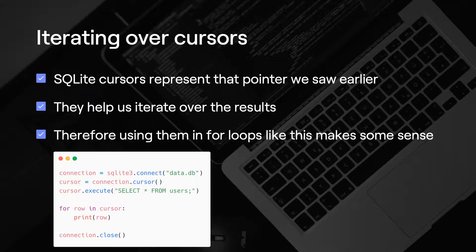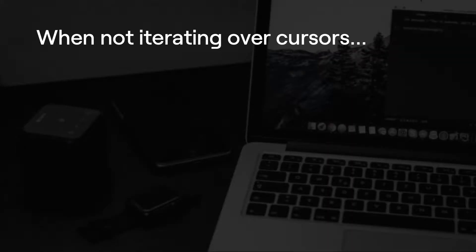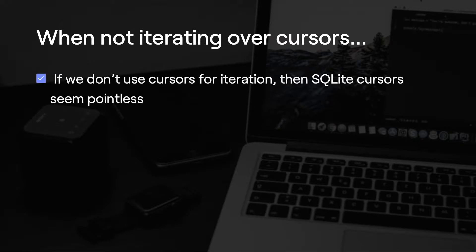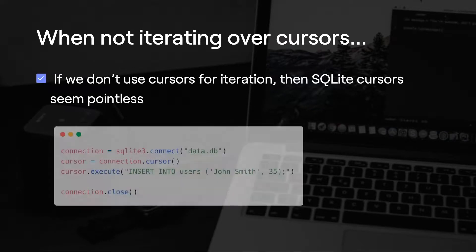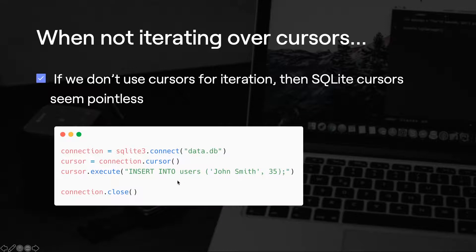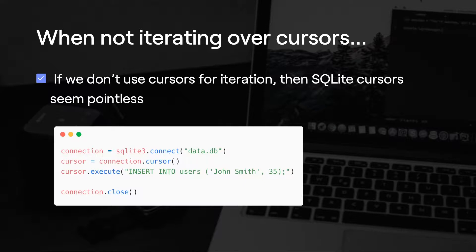But when we're not iterating over the cursor, such as if we try to do an INSERT, then SQLite cursors seem kind of pointless. Here in this code, we are creating our cursor and then executing an INSERT, but we're never iterating over the cursor. So this arrow is really not pointing towards anything, because an INSERT query doesn't even return anything useful to us. And so in this case, the cursor does seem a bit pointless. Some people suggest that this is really just a small problem in SQLite — this cursor shouldn't really exist in all cases.